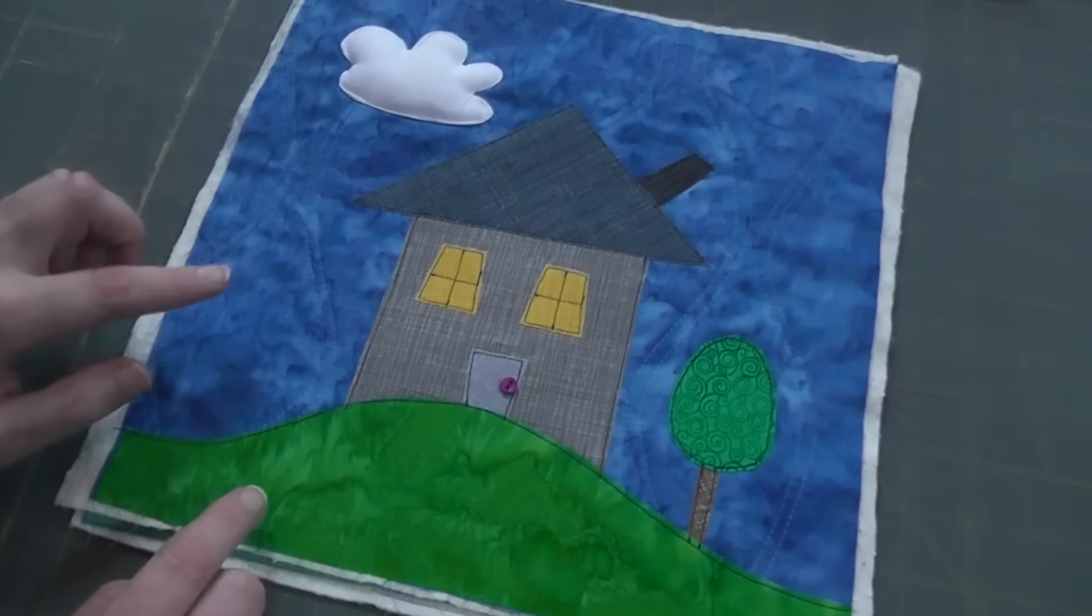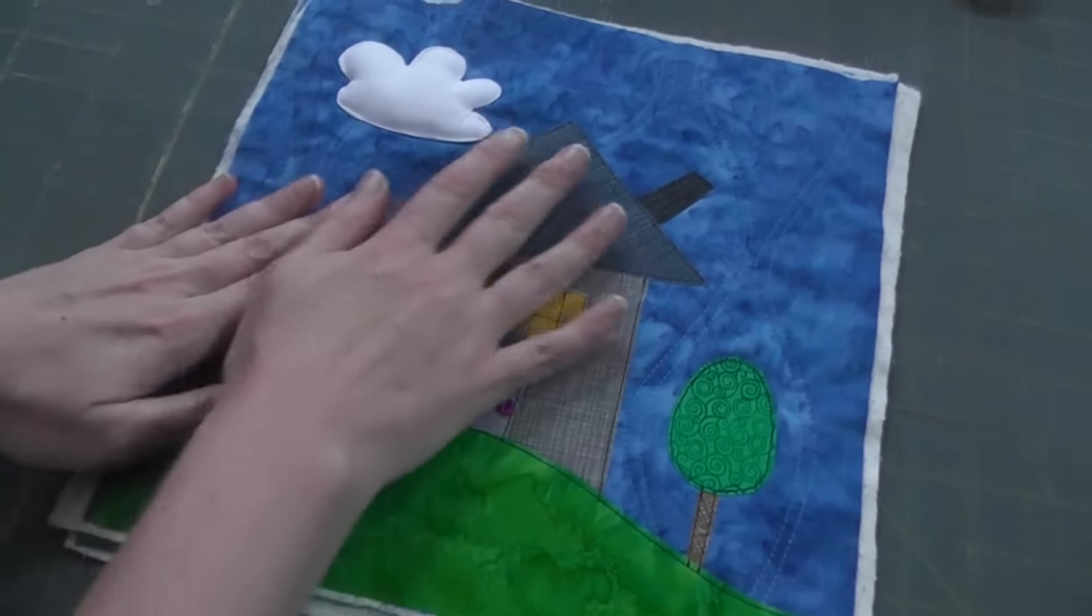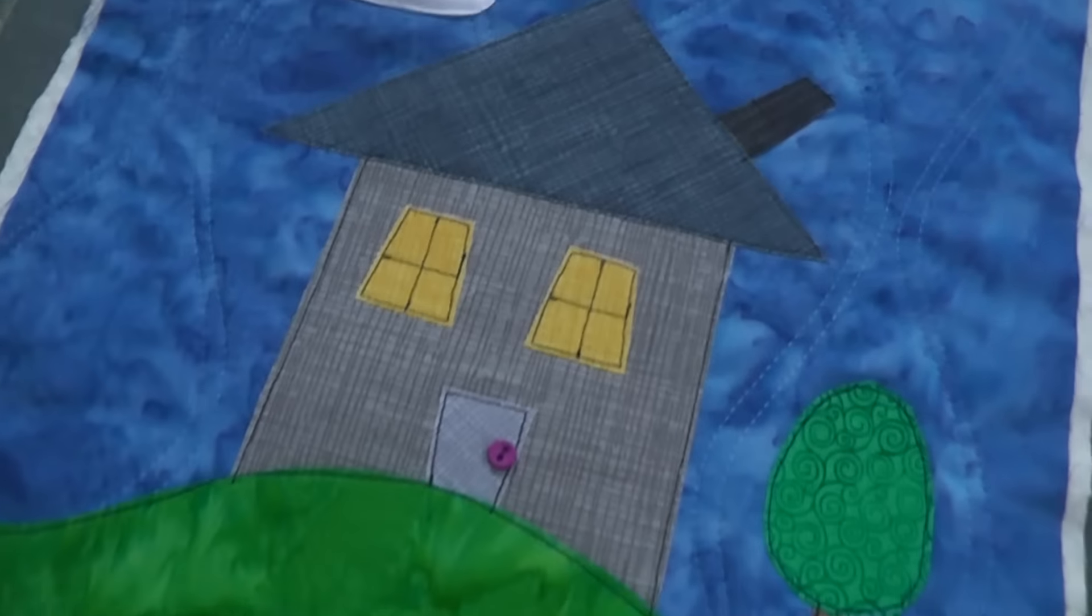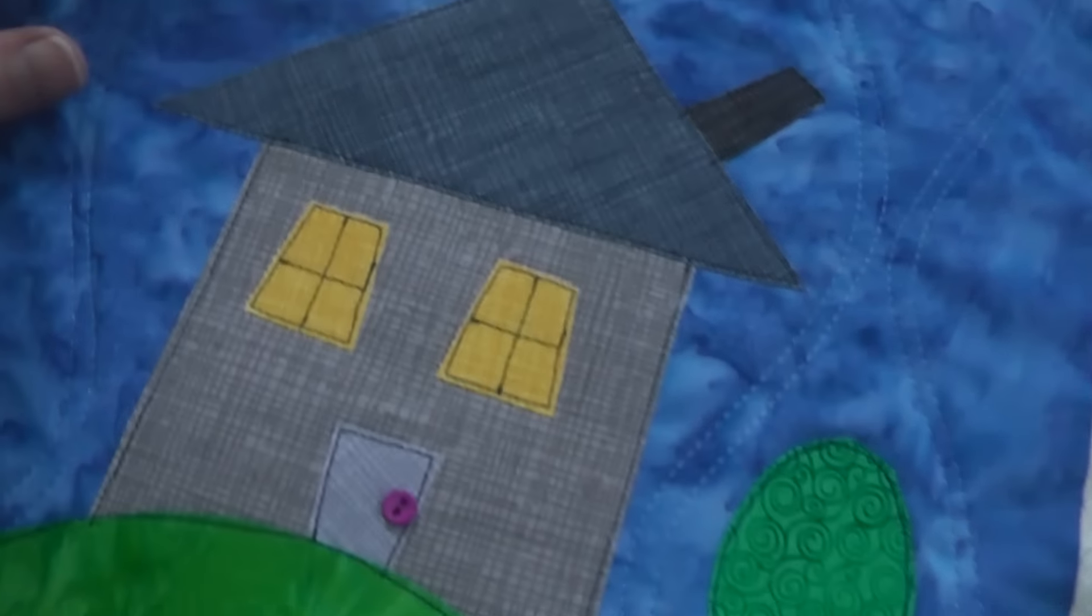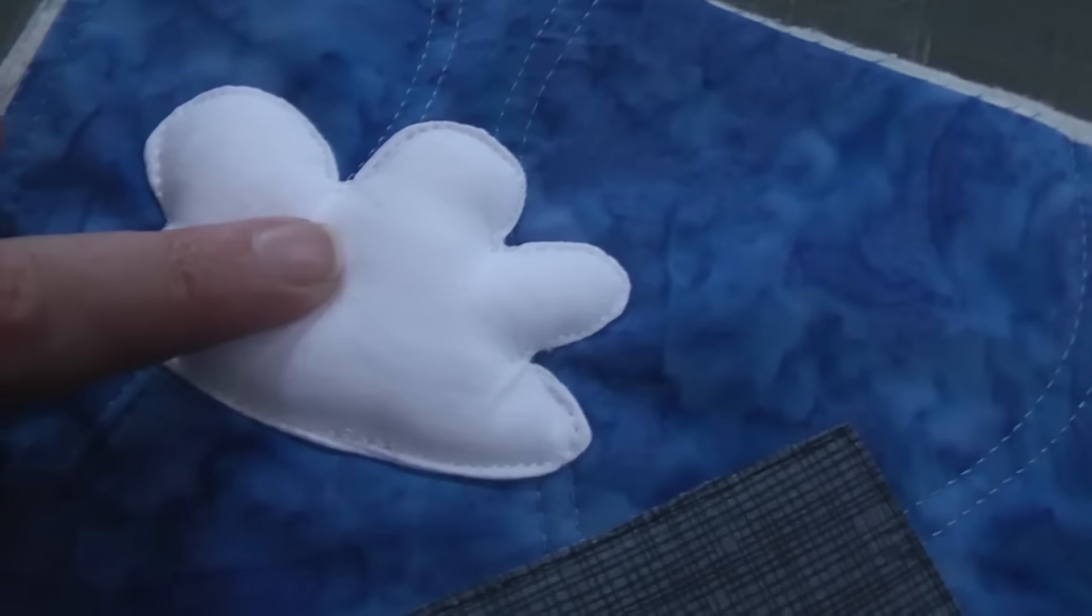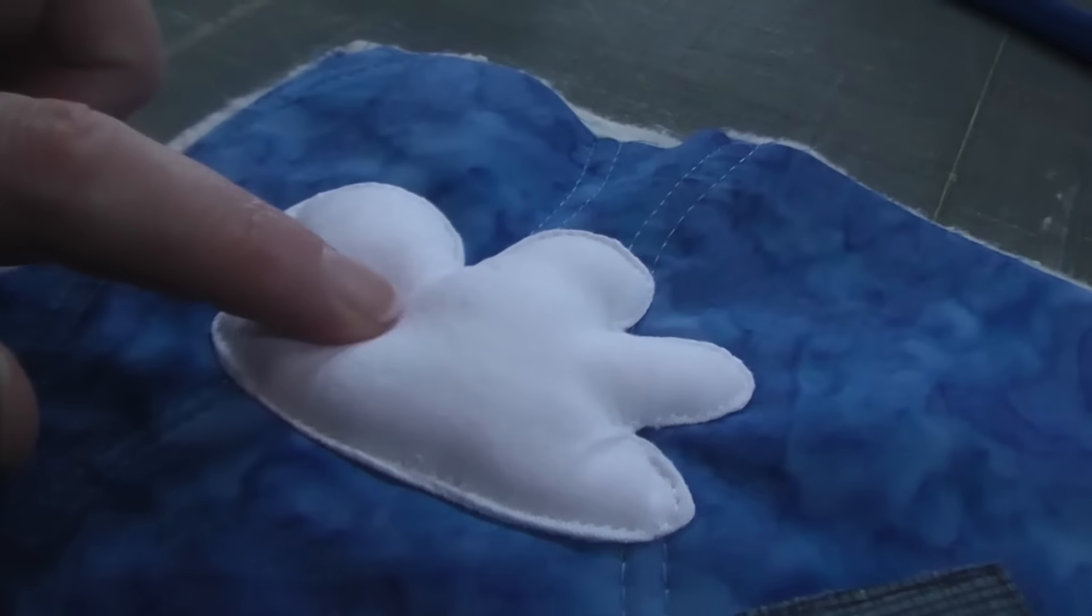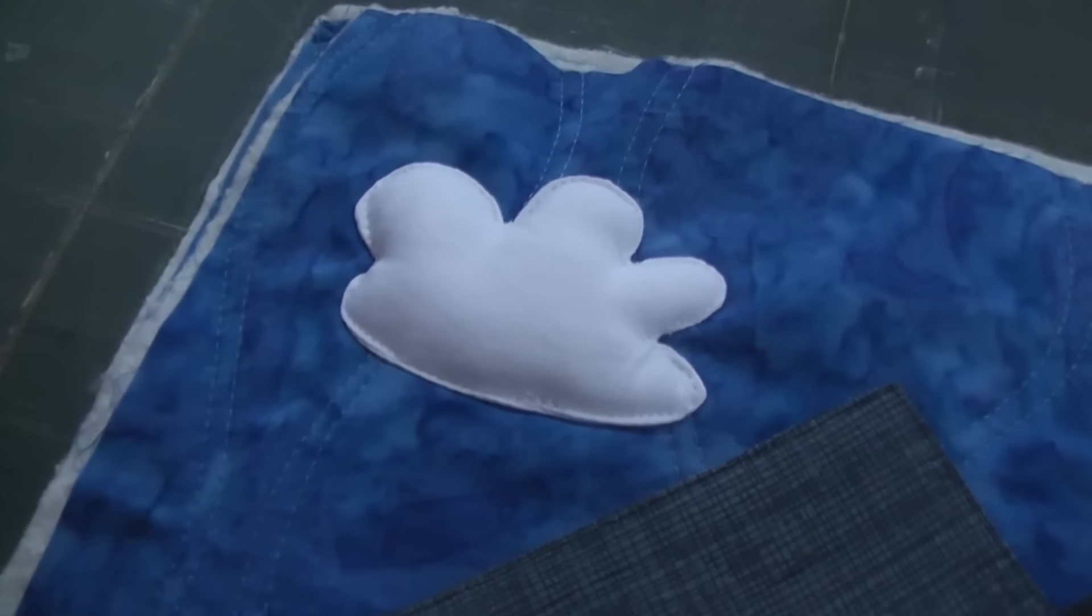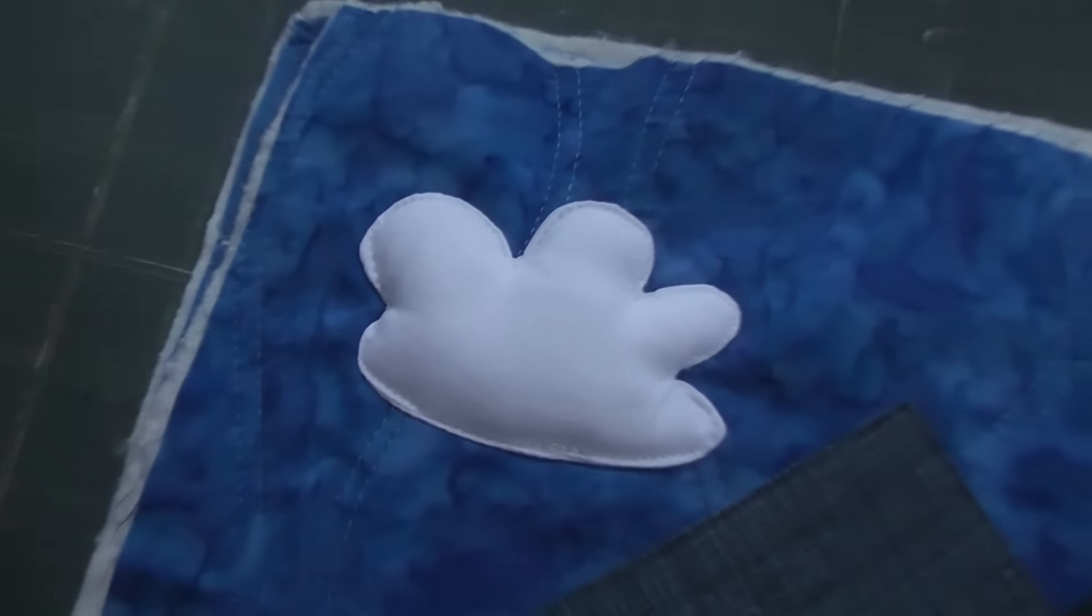Here's an example of a block that has one fake trapunto piece. Everything on the house and the tree and the ground is flat and smooth like normal applique, but if you look at this happy little cloud it's puffy. It's actually a little stuffed cloud that is sewn down to the surface of your block, and that's what I'm going to show you how to do here.